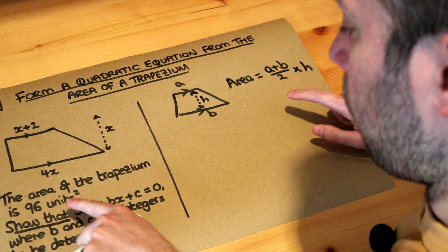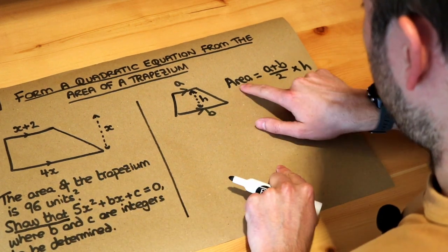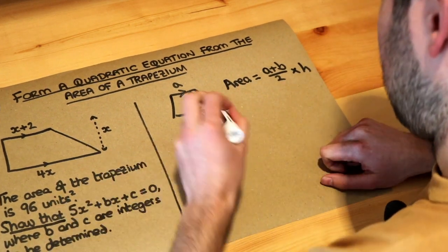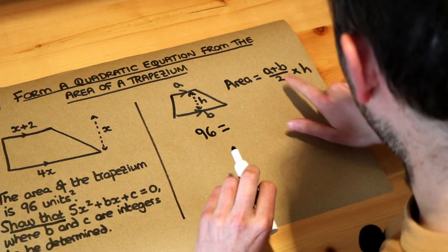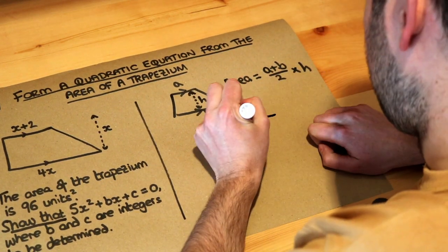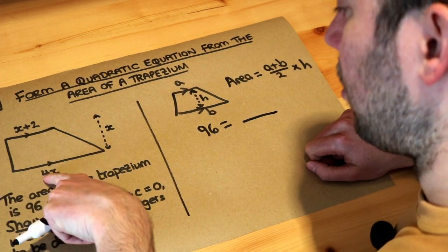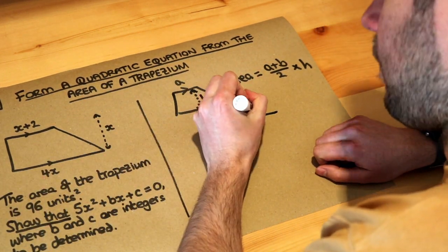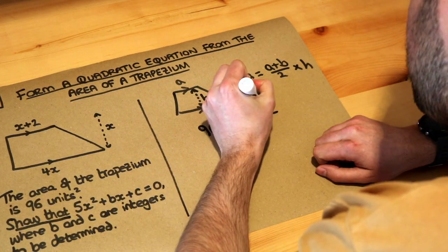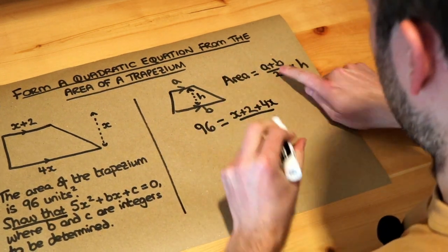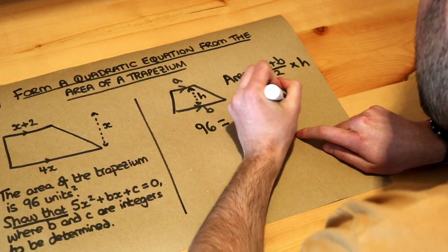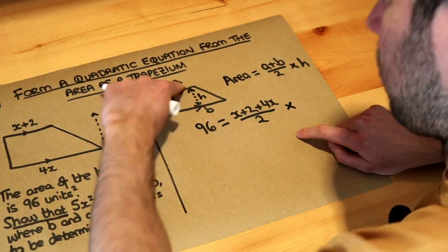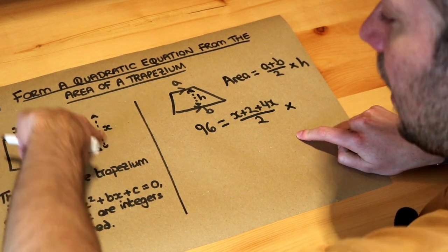So we need to use that formula with this information here. The area we know is 96, so we can write 96 equals, and then what are our sides? The two parallel sides are x plus 2 and 4x. So a is x plus 2, b is 4x, then divide by 2—that's the average of that side and that side—and then times by the height between them, the x in this case.